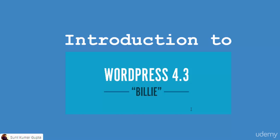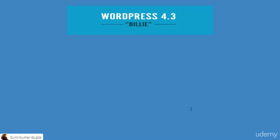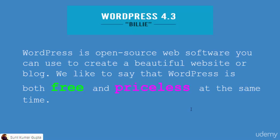So what is WordPress? WordPress is an open source web software. What I mean by web software is that you can use WordPress to create beautiful blog websites and all those things you want to do on the web. So it is basically an open source content management system that can be used to create a beautiful website or blog.